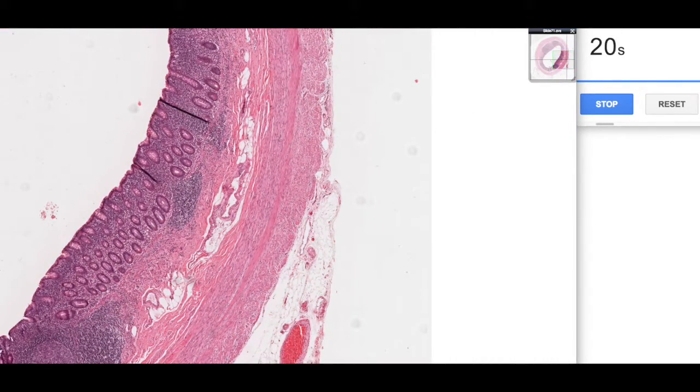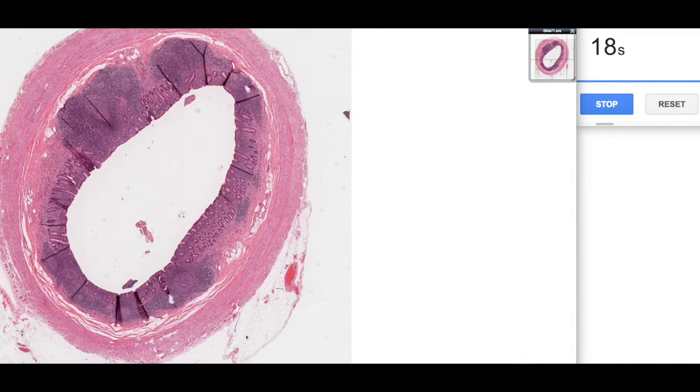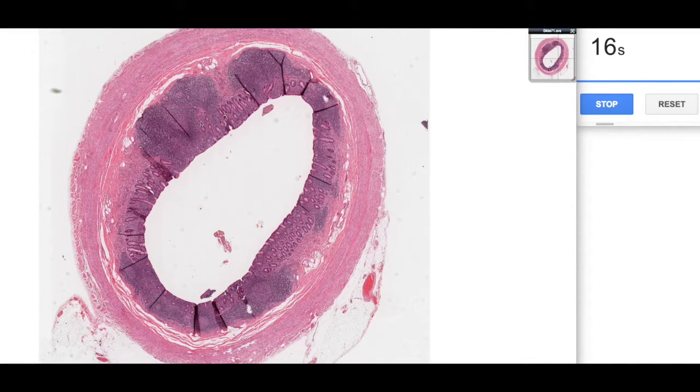So those are the major take-home features of the appendix. Very characteristic basophilic mucosa-associated lymphoid tissue. When you do see the mucosa, it looks like the large intestine. So these are permanent aggregations within the gastrointestinal tract. I hope you found that useful.